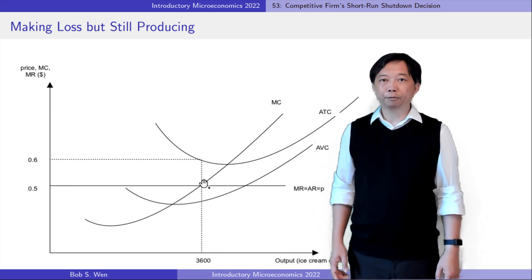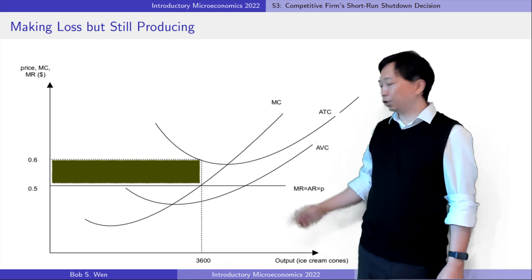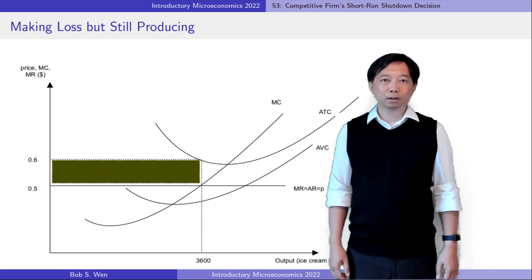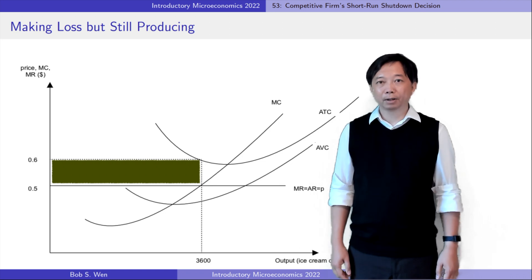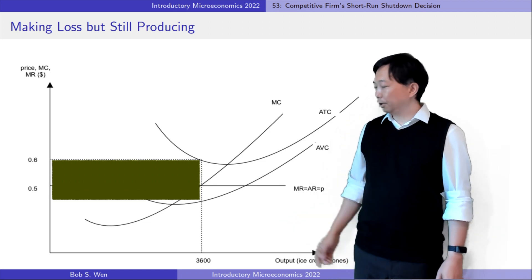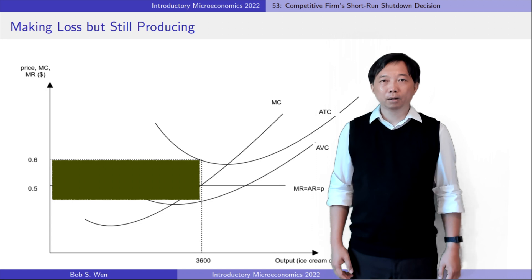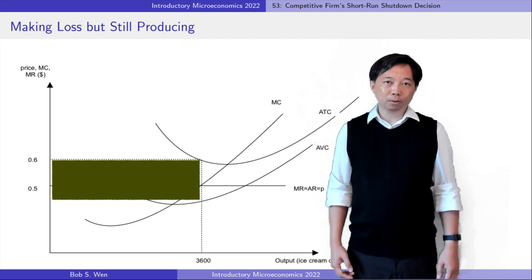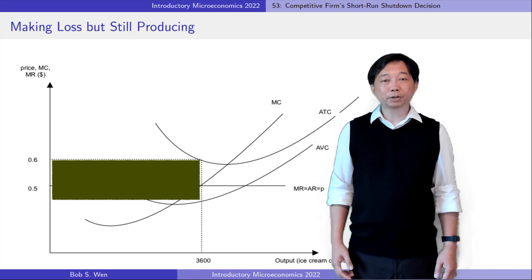If the firm operates, it makes a loss of the shaded rectangle area. If it shuts down, the fixed cost it pays is the larger shaded rectangle area. Why does the firm produce given that it's making a loss?